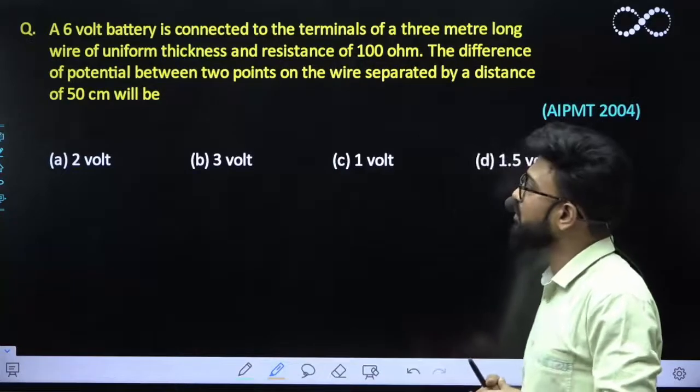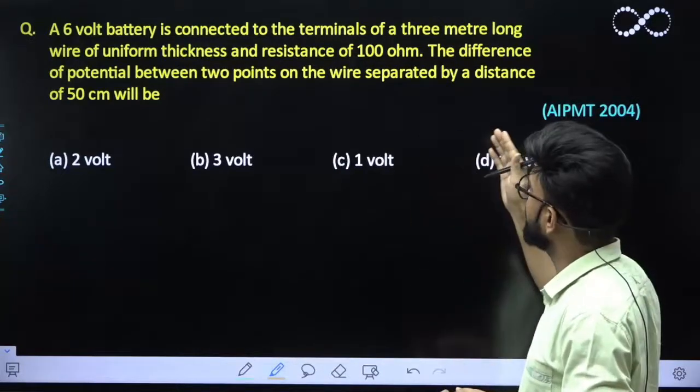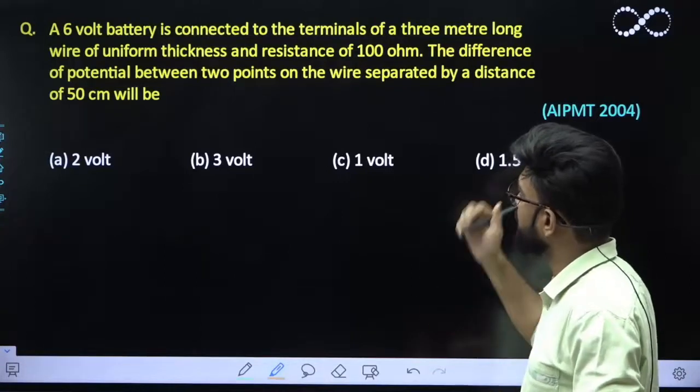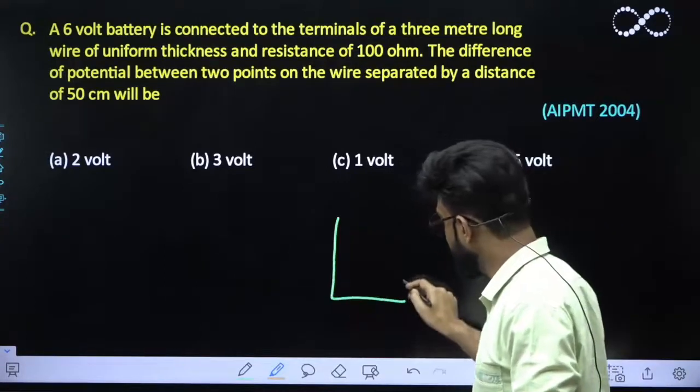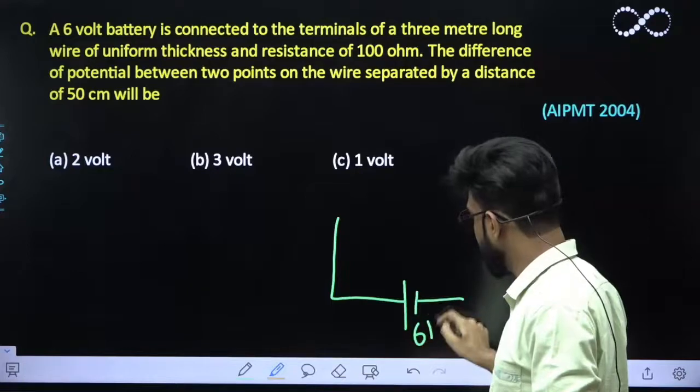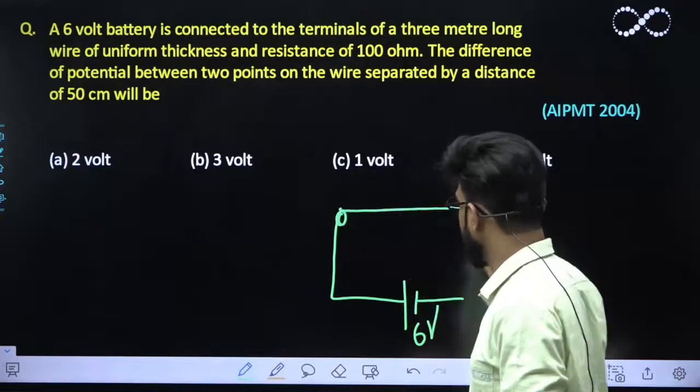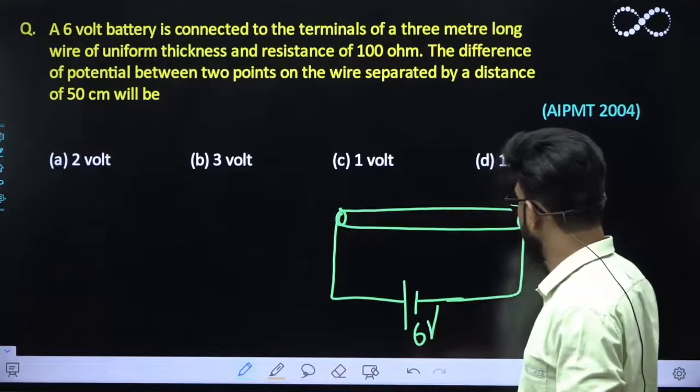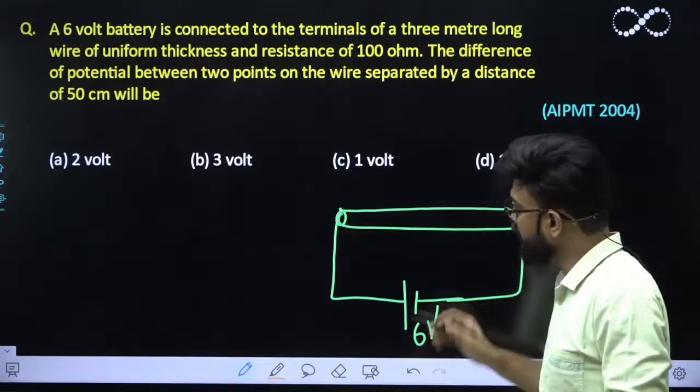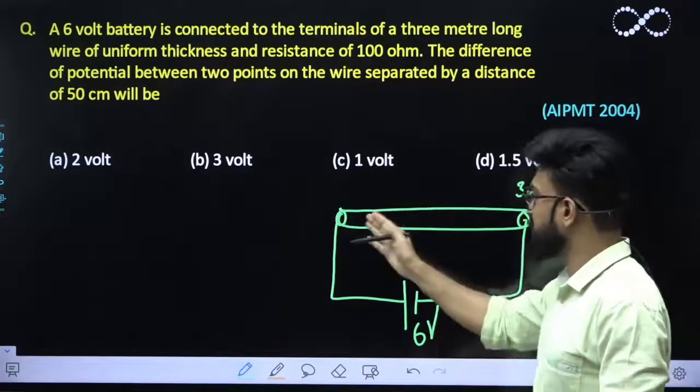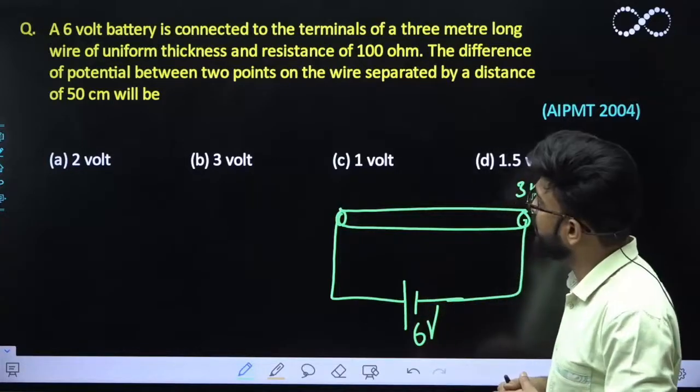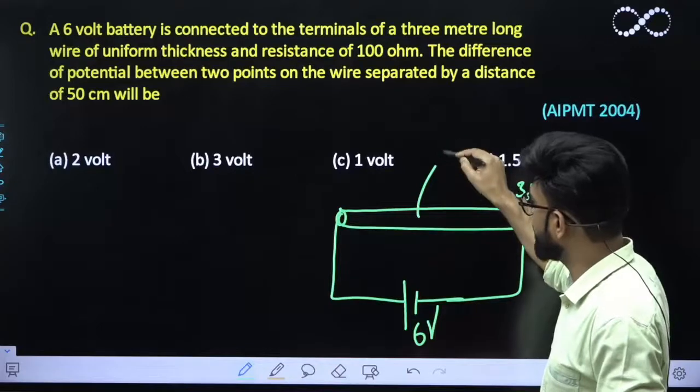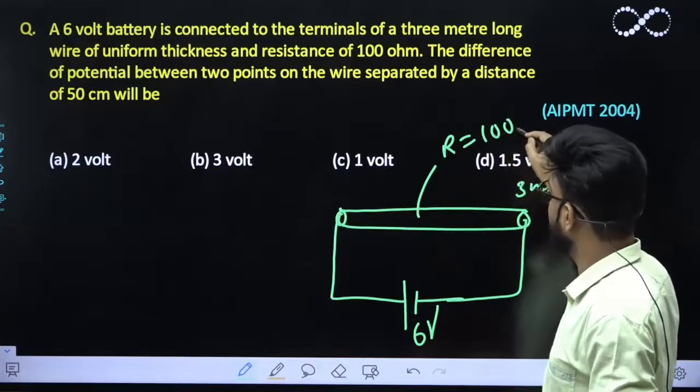Question says a 6 volt battery is connected to the terminals of a 3 meter long wire of uniform thickness and resistance 100 ohms. So you have been given a battery system which is of 6 volt and it is connected to a 3 meter wire of uniform thickness. It would have certain resistance and its resistance is 100 ohms.